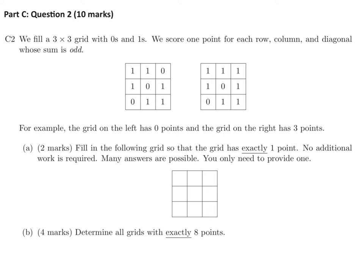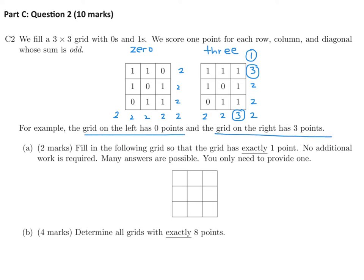Let's verify the examples. The first grid: first row sum is 2, second row sum is 2, third row sum is 2. First column sum is 2, second sum is 2, third sum is 2. Both diagonals sum to 2. All sums are even, so there are zero points. For the second grid, the row sums are 2, 2, 3; column sums are 3, 2, 2; and the diagonals are 1 and 2 — giving three odd sums, so three points.